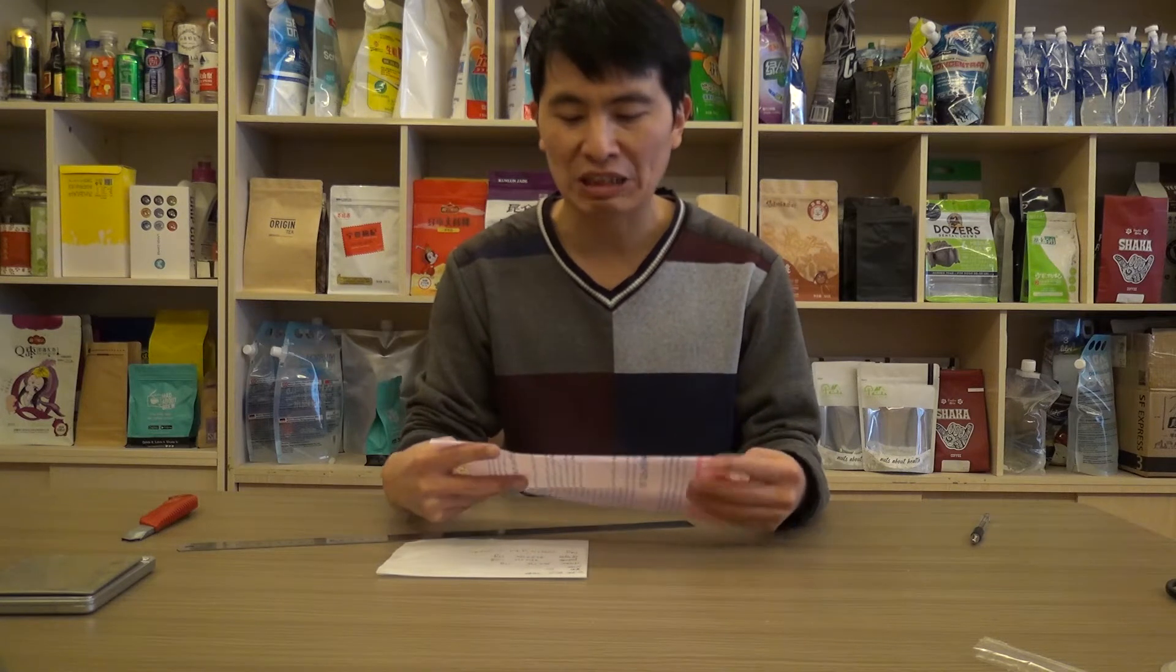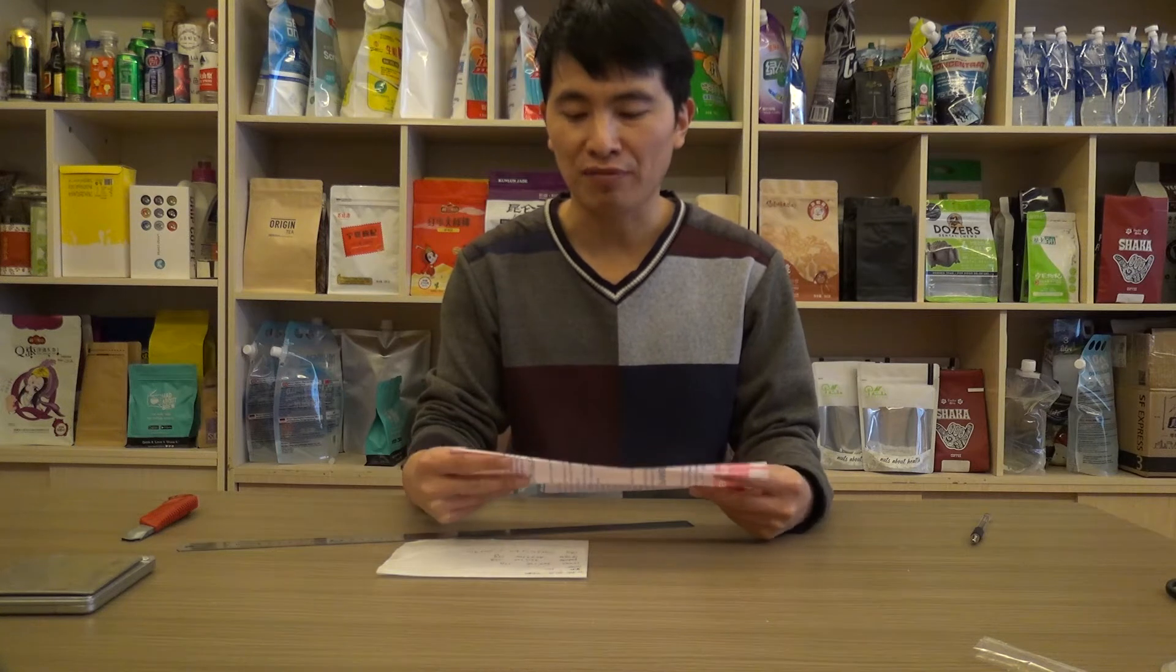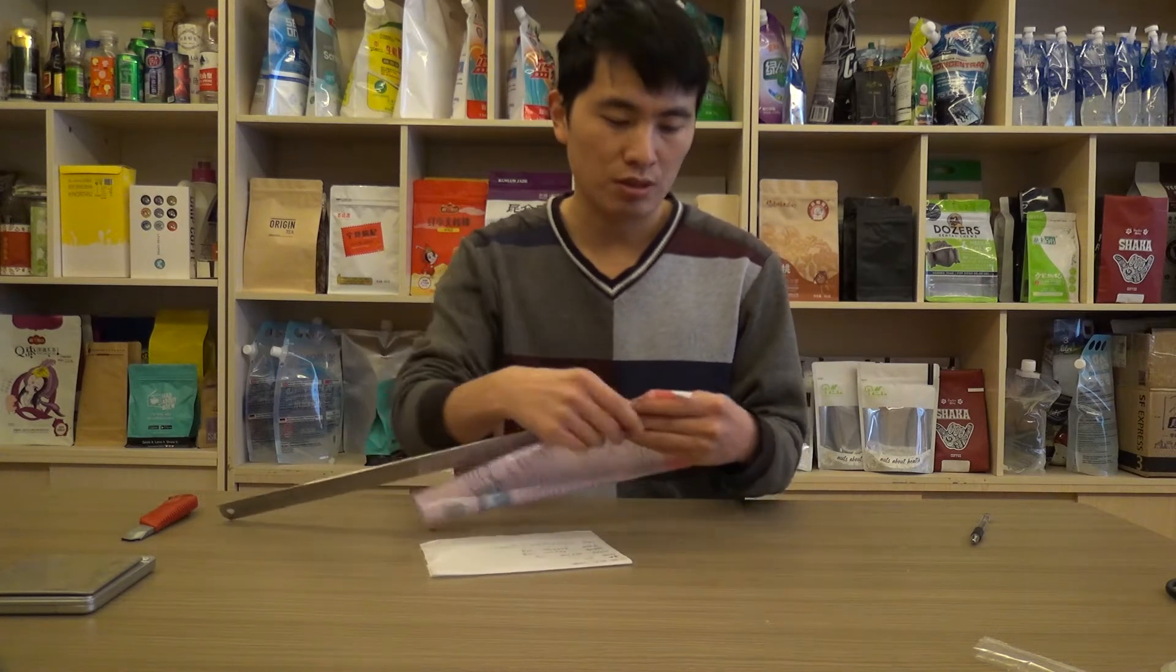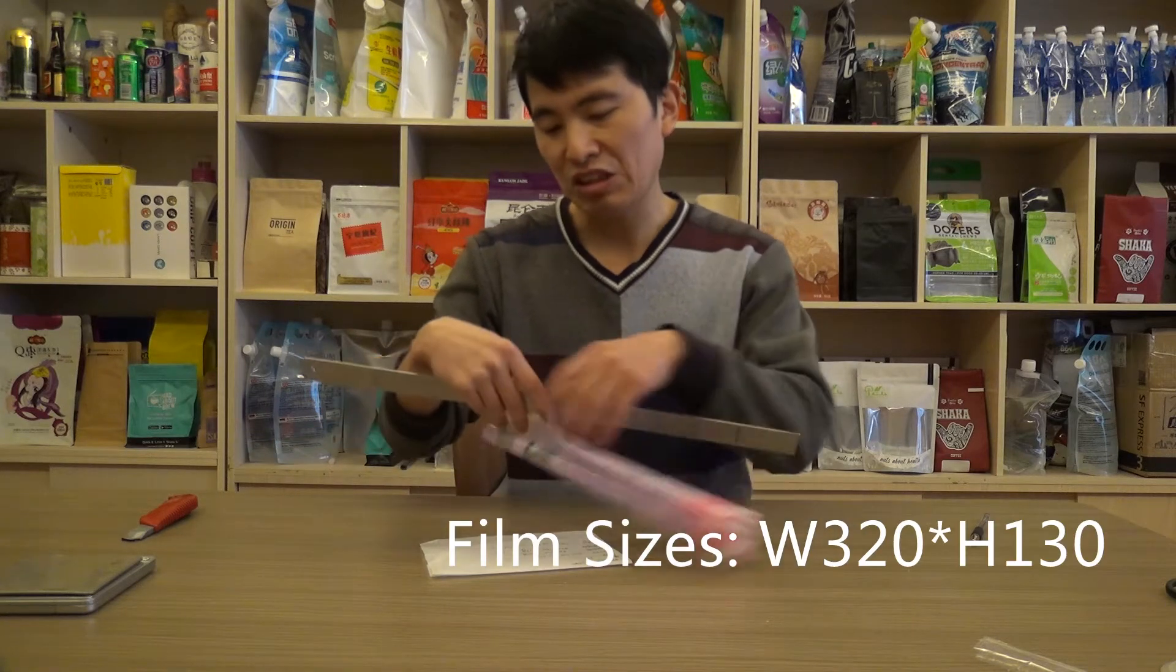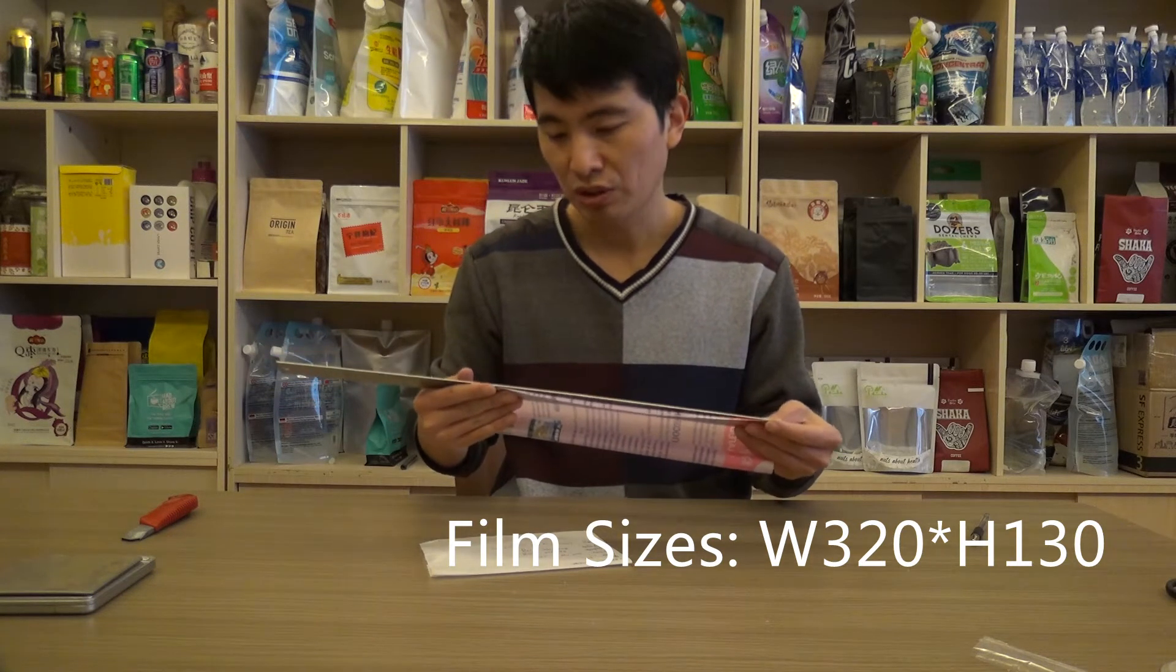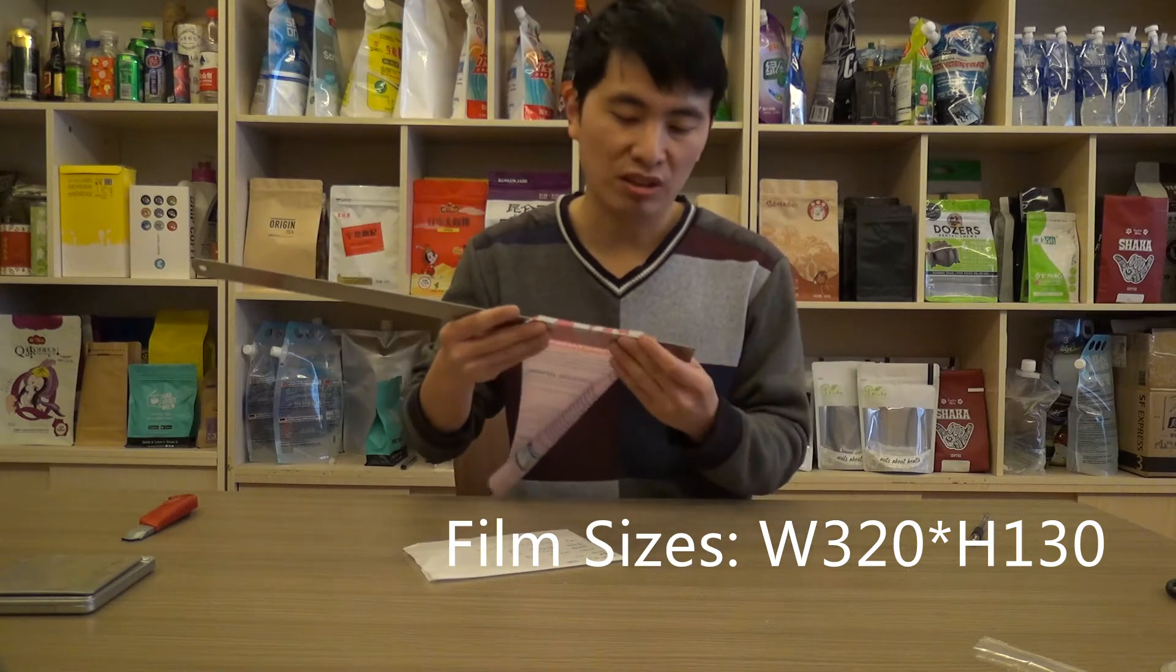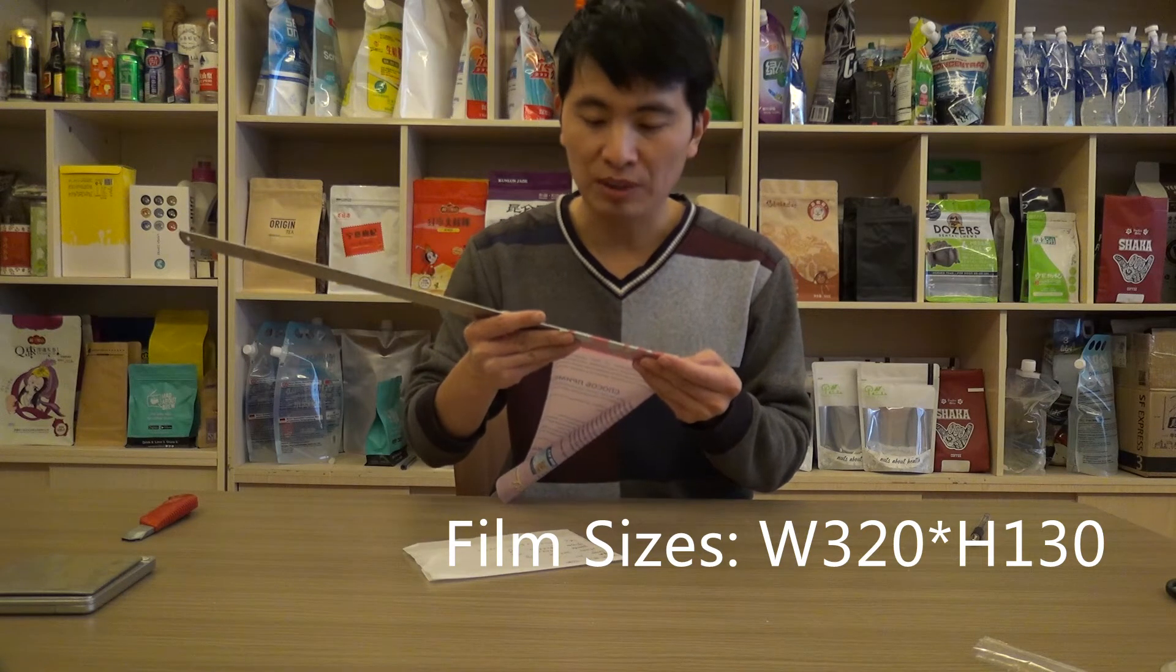And in this episode, I'm going to make a test to check whether the film is big enough to hold soft sugar, 75 grams. The width for this film is 320mm with the height, that means the length, 130mm.